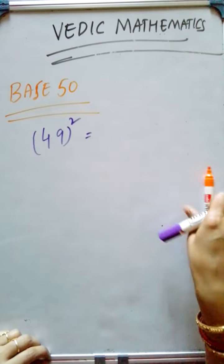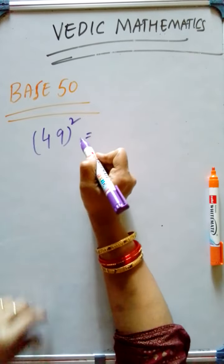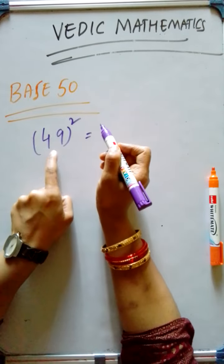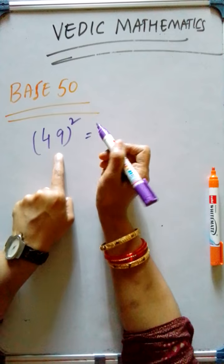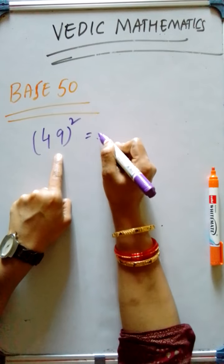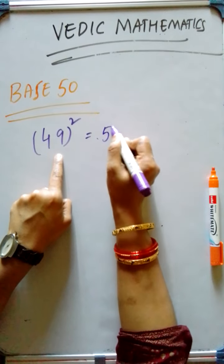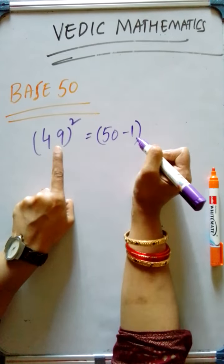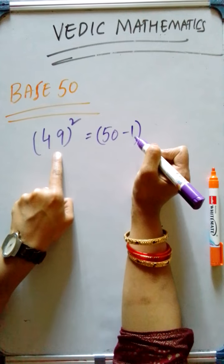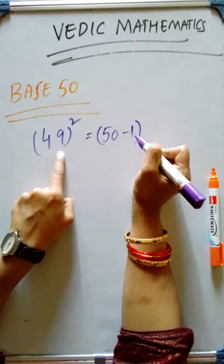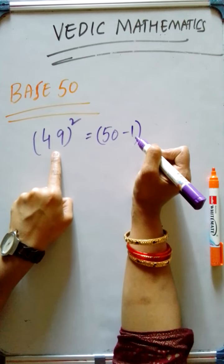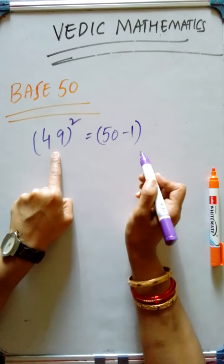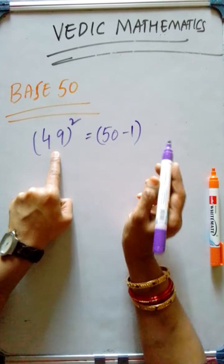Okay, 49. Here, I am writing this 49 as 50 minus 1. How much it is lesser than 50? 50 minus 1.